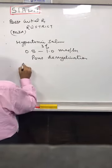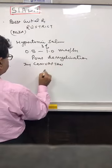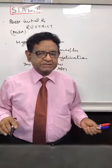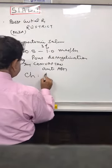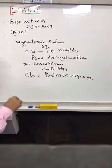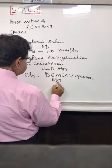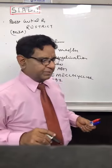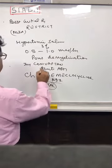In acute cases, injection conivaptan, an anti-ADH drug, can also be given. In chronic cases, oral capsule demeclocycline is used, which blocks the action of ADH in the renal tubules, leading to nephrogenic diabetes insipidus (NDI) and causing more water to be excreted. Conivaptan is injectable for acute use; demeclocycline is oral for chronic management.